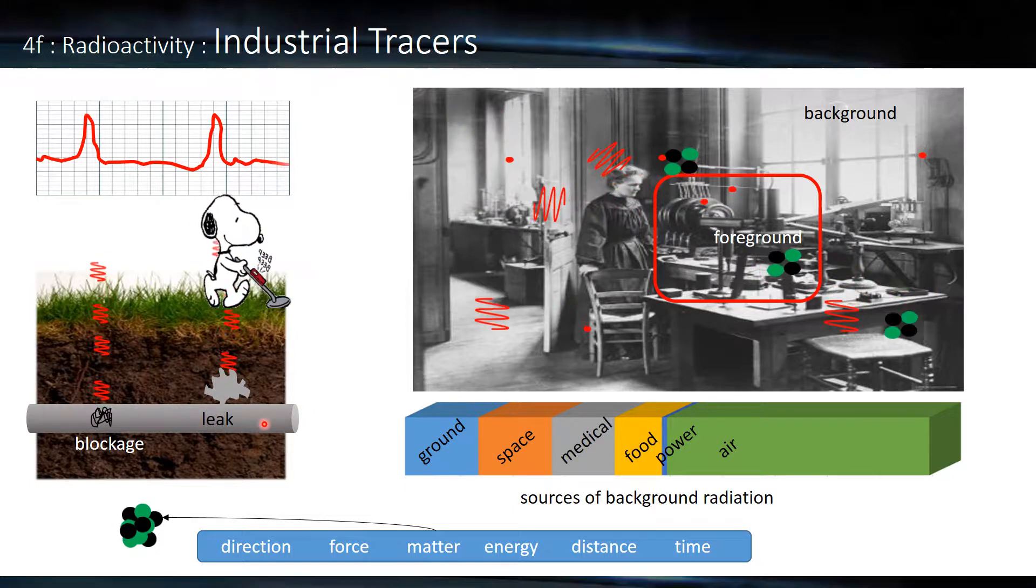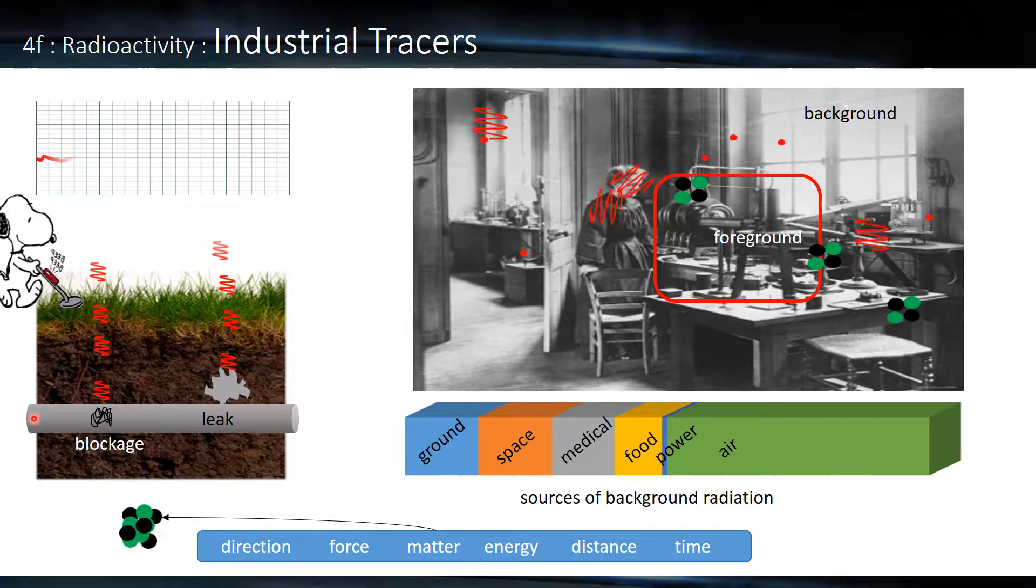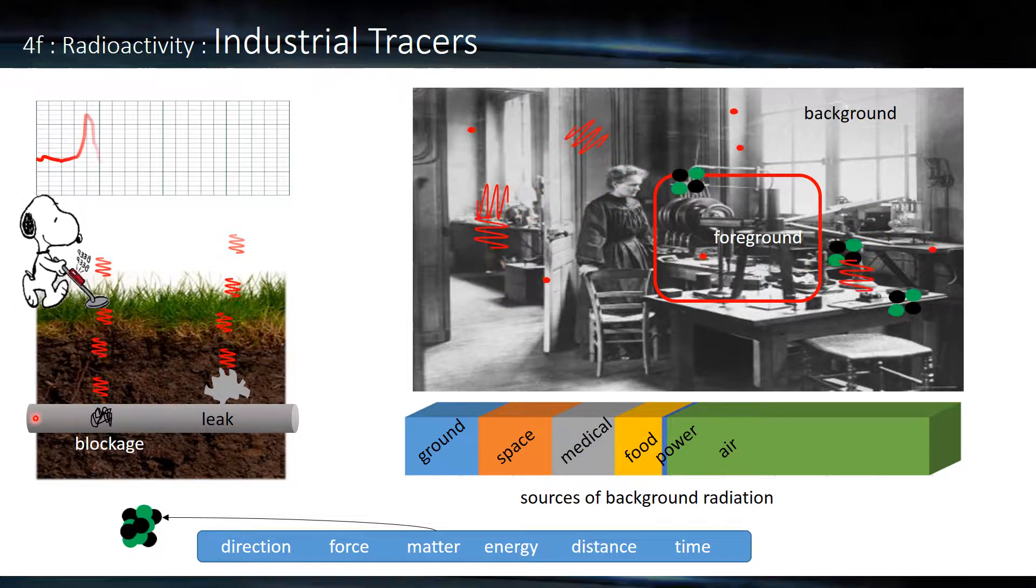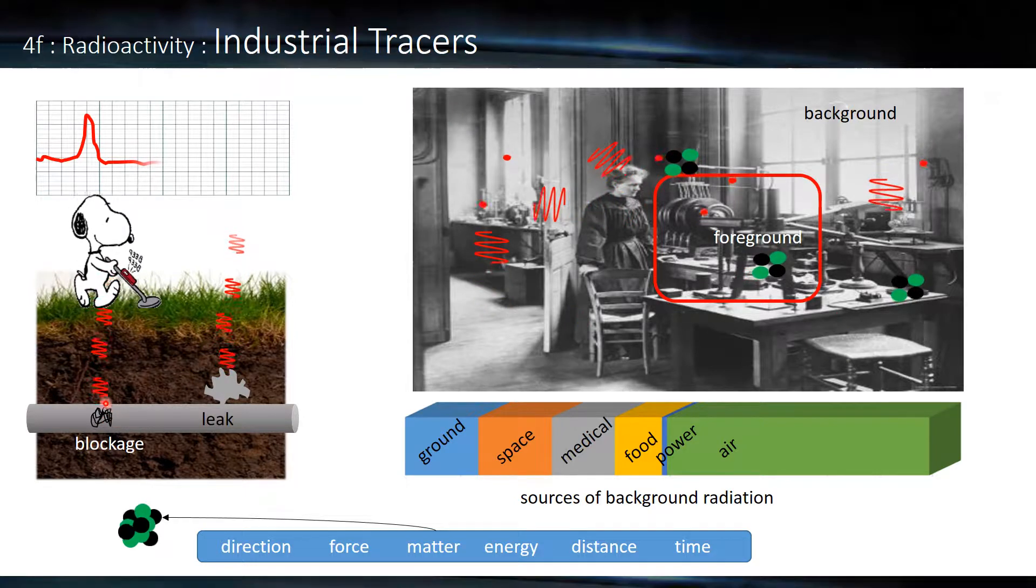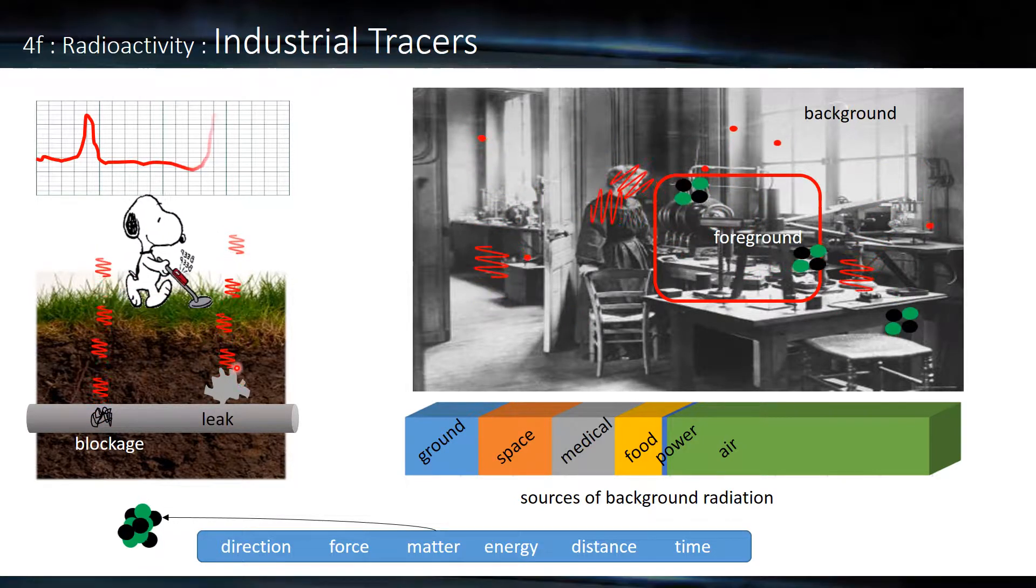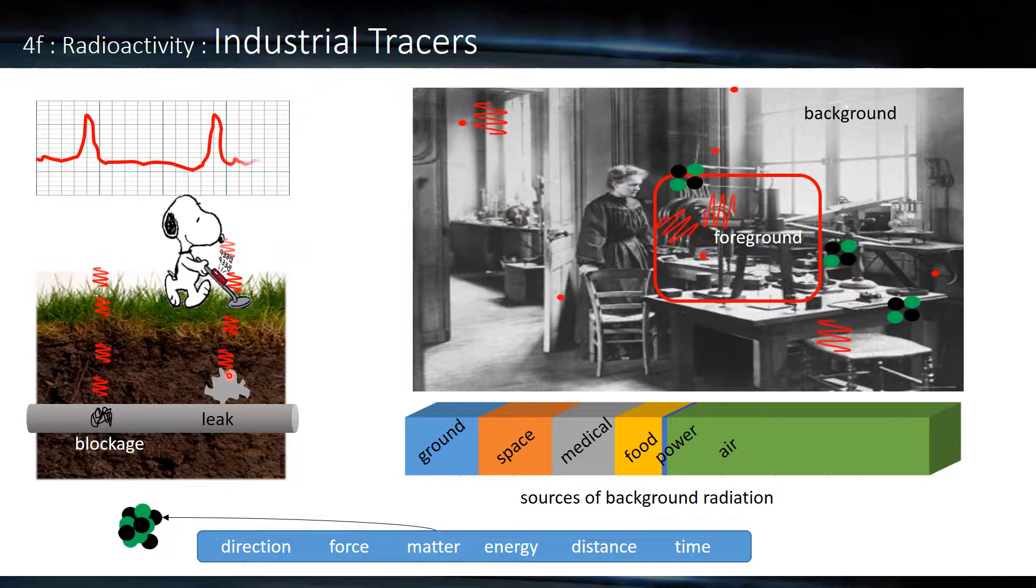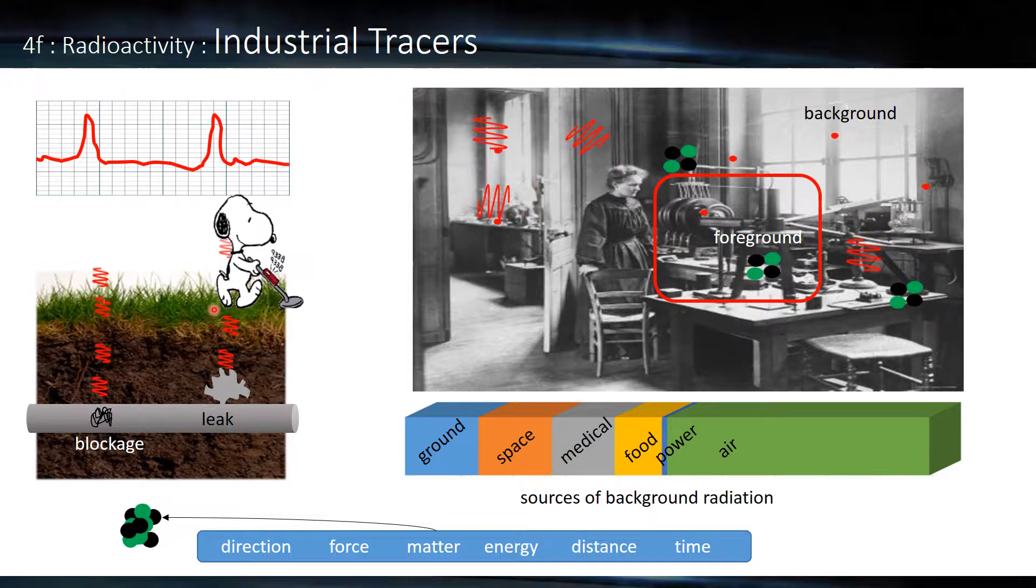Now digging up the pipe is very expensive. It's much easier to put a small amount of radioactive substance into the fluid. This will collect either at a blockage or a leakage. It will come out and we'll get a strong signal, a large amount of gamma. It has to be gamma, it's the most penetrating.